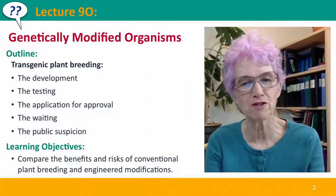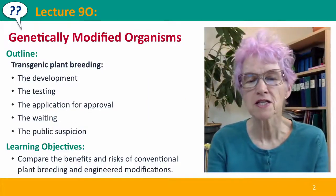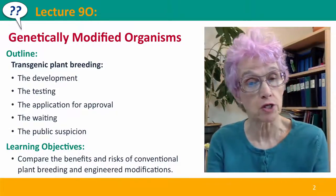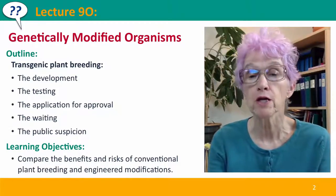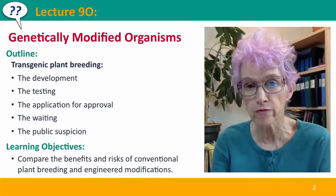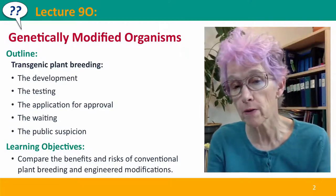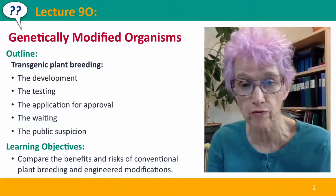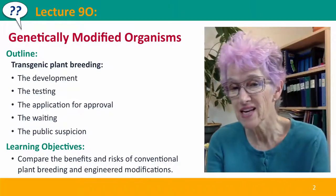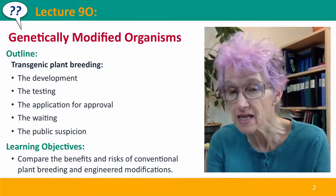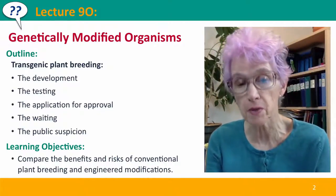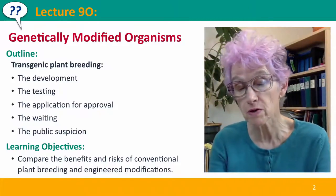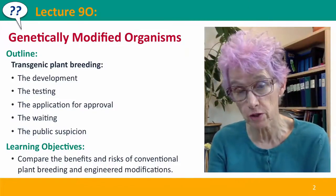Hi, everyone. Welcome back to Useful Genetics. This is lecture 9.0, where we're going to continue discussing plant breeding by talking about genetically modified organisms. We'll talk about the steps in producing a genetically modified plant, the development and the testing, the bureaucracy, the application for approval and the waiting, and we'll talk about the public suspicion as well.